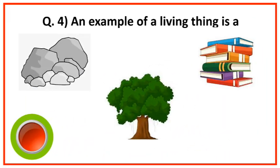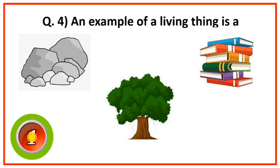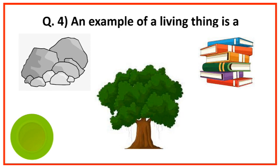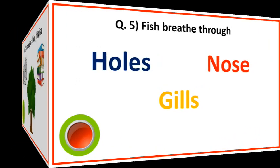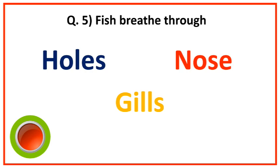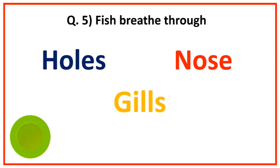An example of a living thing is a plant. Fish breathes through gills.